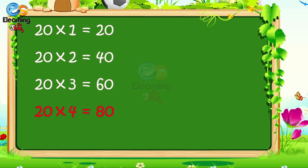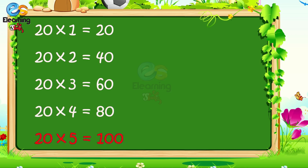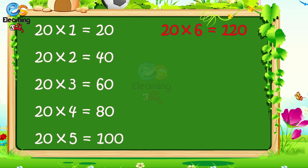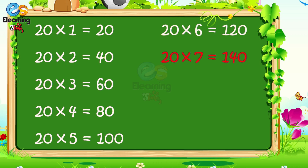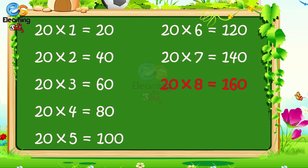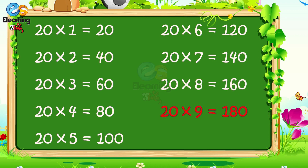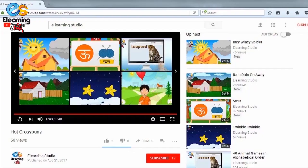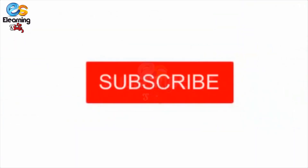20 times 5 is 100. 20 times 6 is 120. 20 times 7 is 140. 20 times 8 is 160. 20 times 9 is 180. 20 times 10 is 200. Please subscribe to this channel for more videos.